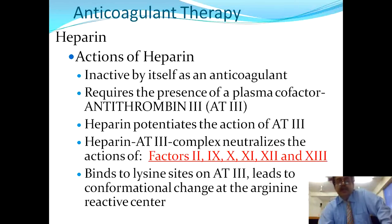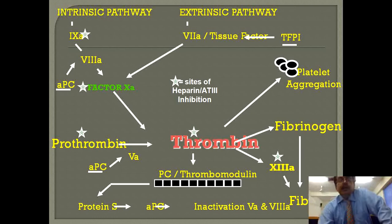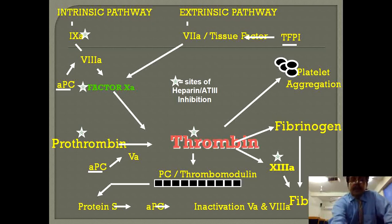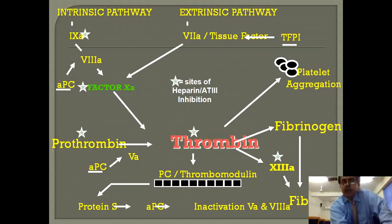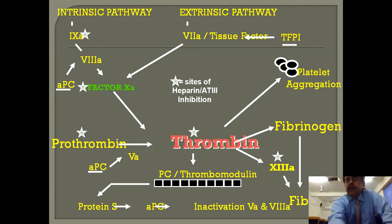Heparin leads to conformational changes at the arginine reactive center of antithrombin 3. The antithrombin 3 can act on factor 10, prothrombin, thrombin, protein C and thrombomodulin, protein S, platelets, and fibrinogen — stopping its conversion to fibrin. Factor 13 also helps in this state. Low concentrations of heparin increase the activity of antithrombin 3 considerably, especially against factor 10A and thrombin, which are the most sensitive components of the coagulation cascade.